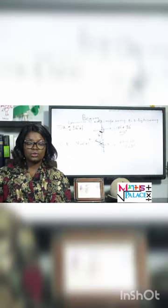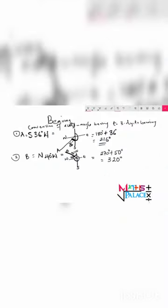270 degrees plus 50 degrees is equal to 320 degrees. Since we are moving from the north to point B, and a complete revolution is 360 degrees, this means 360 minus the angle from north to point B, which is 40 degrees. So 360 degrees minus 40 degrees equals 320 degrees.